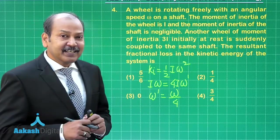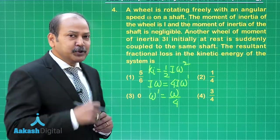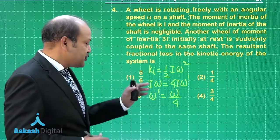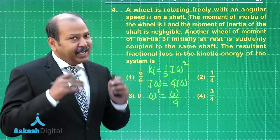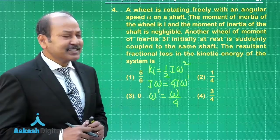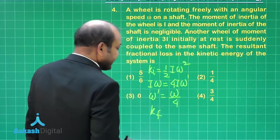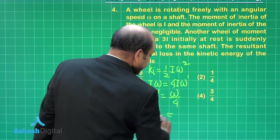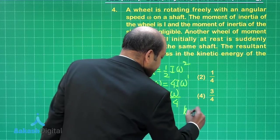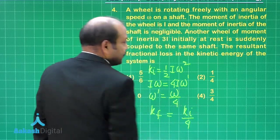What is the final rotational kinetic energy? The final rotational kinetic energy is 1 by 2 into 4I into omega dash square. And if we perform the calculations, the final kinetic energy k_f is coming out as k_I divided by 4.